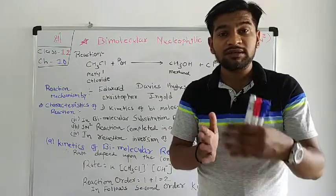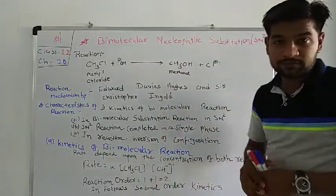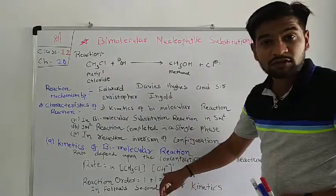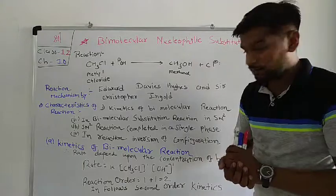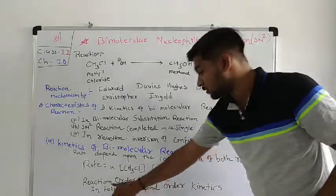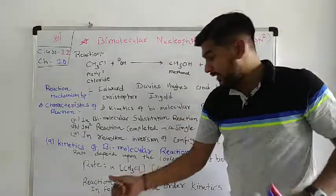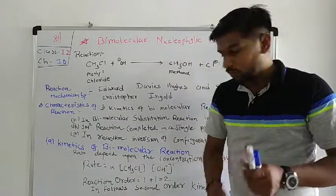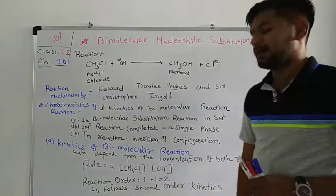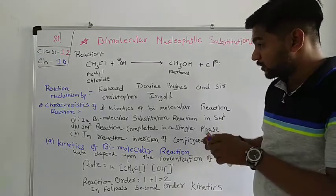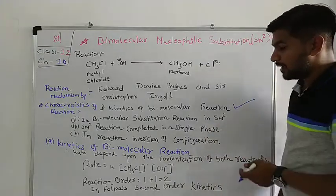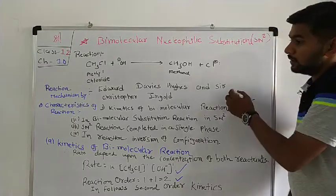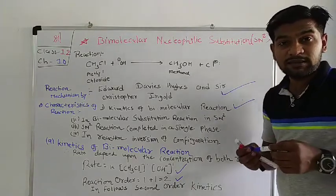It is a second-order reaction because it depends upon both reactant concentrations — CH₃Cl and OH⁻. The concentration of both is involved. The rate: K = [CH₃Cl][OH⁻]. It follows second-order kinetics. Here we have defined the first characteristic: the rate, the reaction order, and who gave the mechanism.